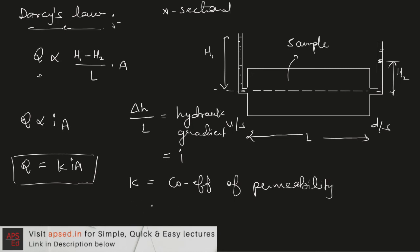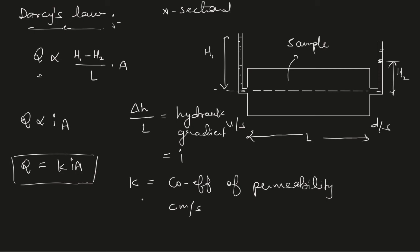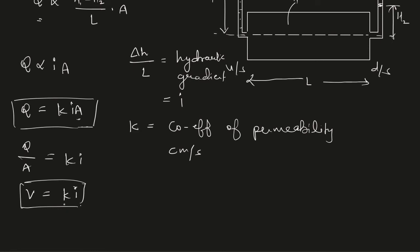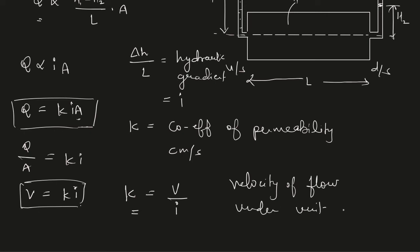The constant k is known as the coefficient of permeability, and it has the unit of velocity — typically given in centimeters per second. Dividing both sides by area gives v = q/a = k·i, so k = v/i. The coefficient of permeability is defined as the velocity of flow through the medium under unit hydraulic gradient — that is, when i = 1, k equals v.